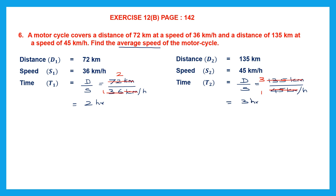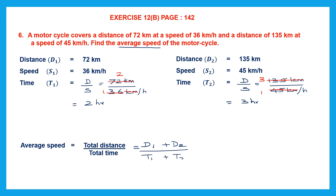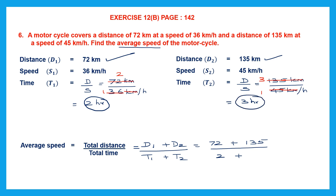Now we can find the average speed. The formula for average speed is total distance divided by total time. Total distance is d1 plus d2, and total time is t1 plus t2. D1 is 72 kilometers plus d2 which is 135, and t1 is 2 hours plus t2 which is 3. So we have 72 plus 135 in the numerator, which equals 207.